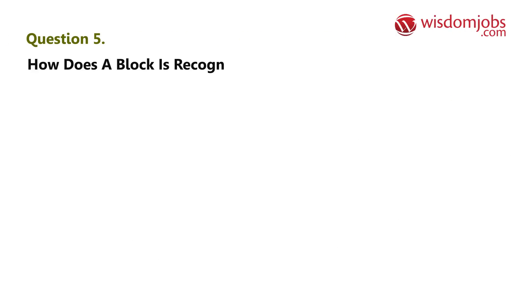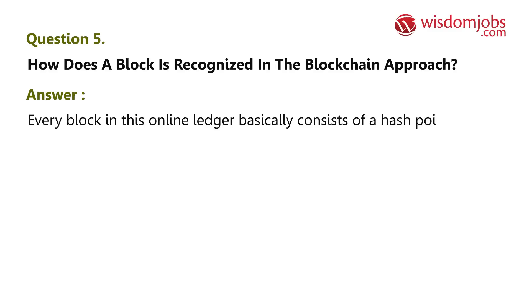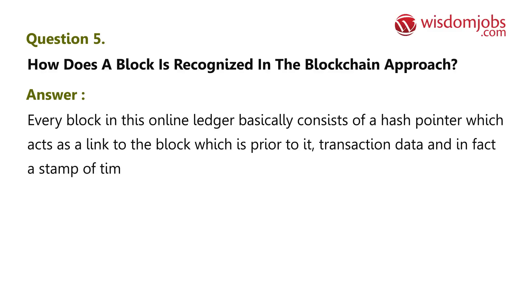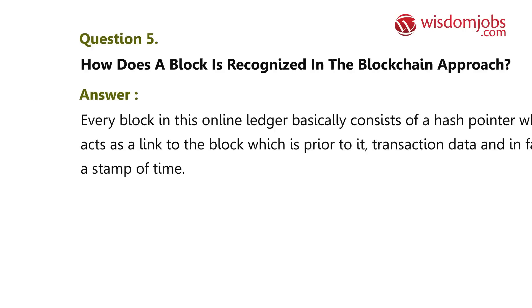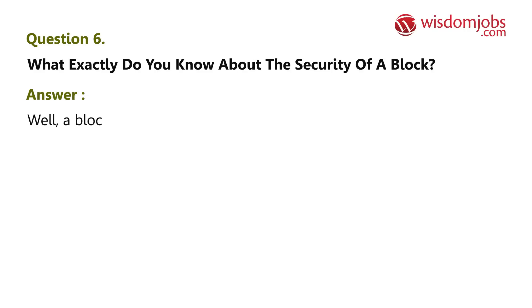Question 5: How is a block recognized in the blockchain approach? Answer: Every block in this online ledger basically consists of a hash pointer, which acts as a link to the block prior to it, transaction data, and a timestamp.